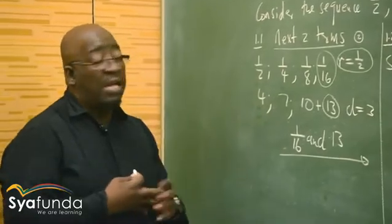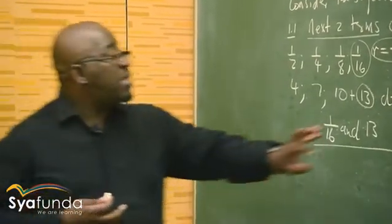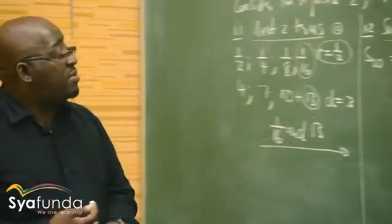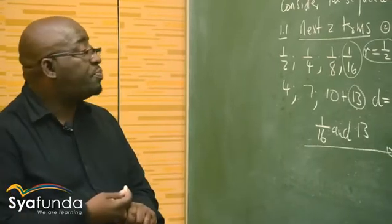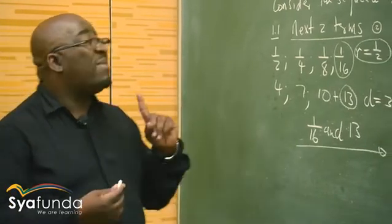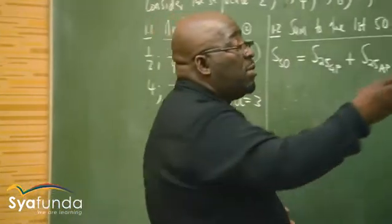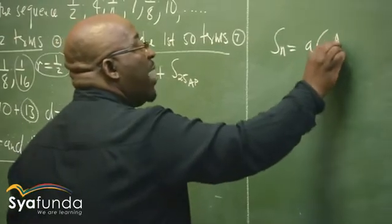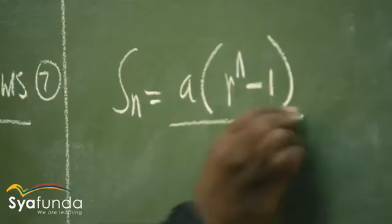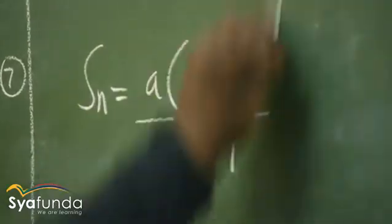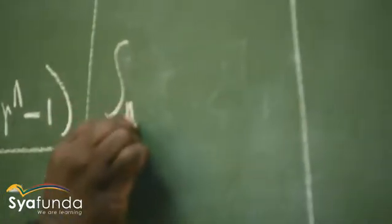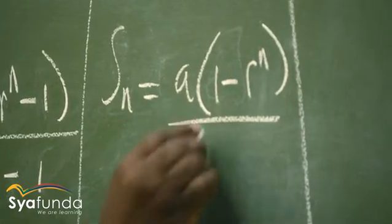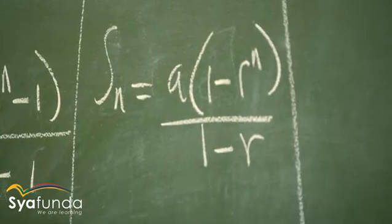Now let me do that. To find the first 50 terms, I've got to find the sum of the first 25 of the GP as well as the sum of the first 25 of the arithmetic. For the geometric progression, the formula is: Sn = a(r^n − 1)/(r − 1), or alternatively Sn = a(1 − r^n)/(1 − r).